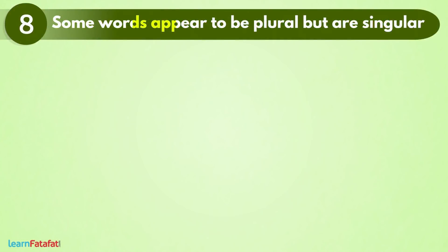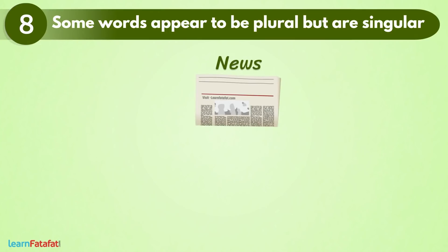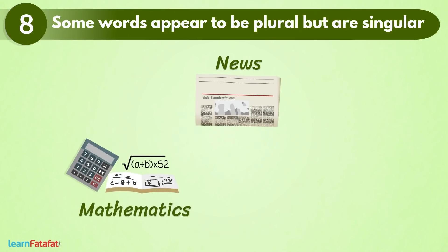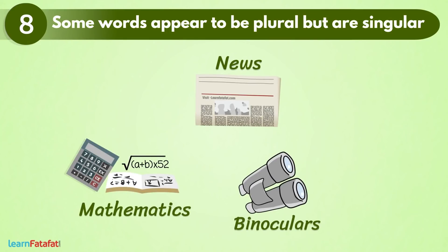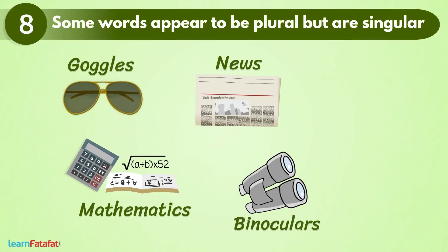Some words appear to be plural but are actually singular. कभी-कभी words plural लगते हैं पर होते हैं वो singular ही हैं। जैसे news, mathematics, binoculars, goggles, jeans।